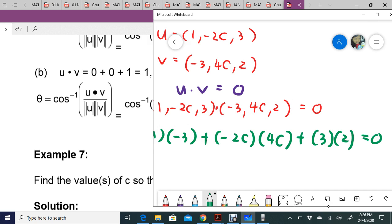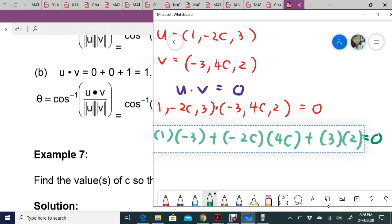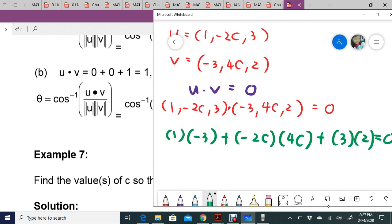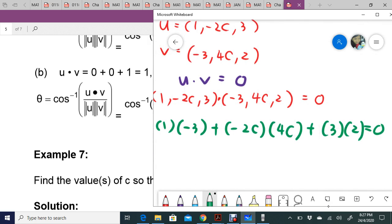So negative 3 plus negative 8c squared plus 6 equals 0. That gives you negative 8c squared plus 3 equals 0.